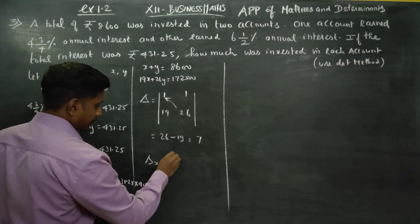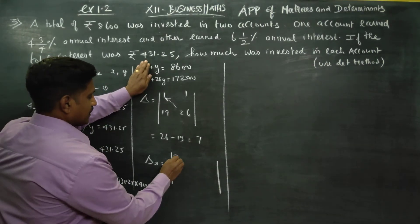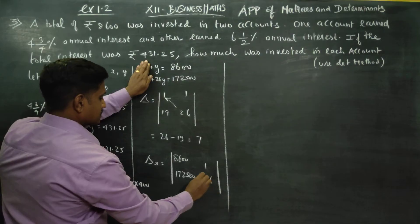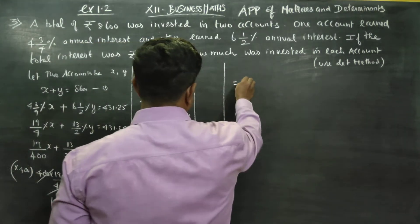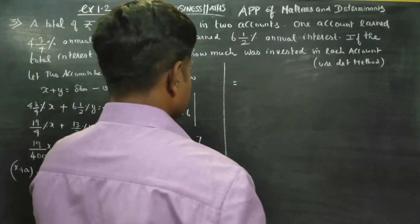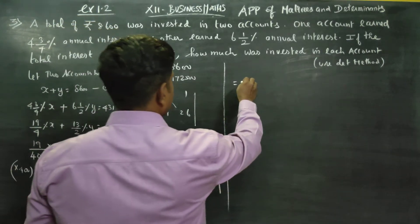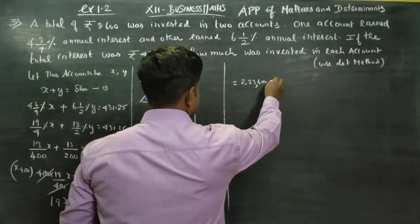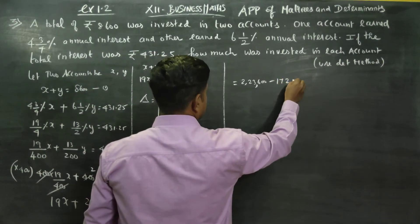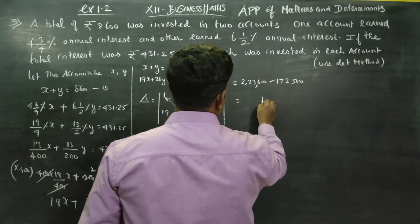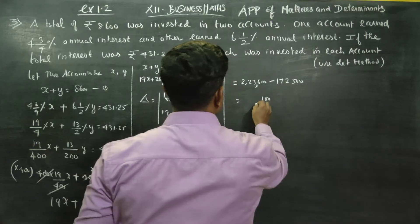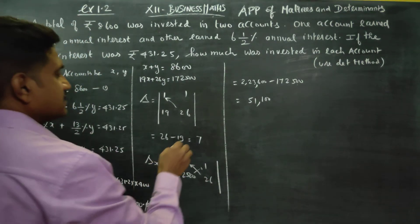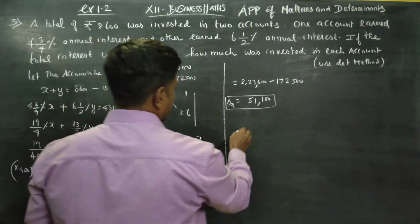For delta x, replace the first column with the right-hand side values: 8600 and 1,72,500. The matrix is 8600, 1 and 1,72,500, 26. Calculating: 8600 into 26 gives 2,23,600 minus 1,72,500. Delta x equals 51,100.